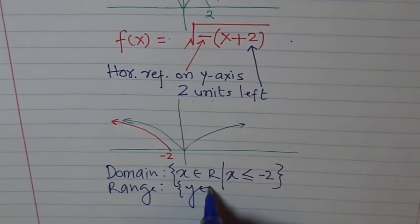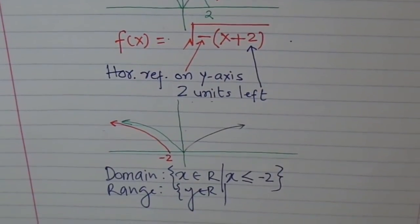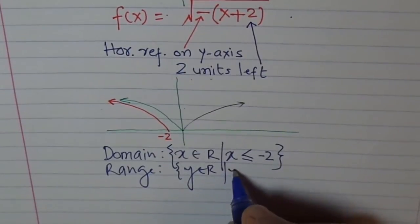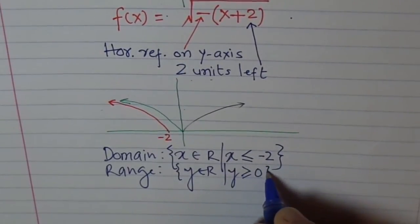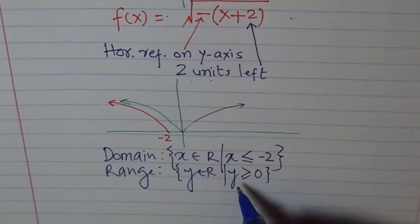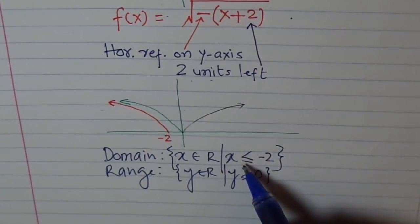And range? Range is y belongs to real number where y is greater than equal to zero. So nothing happened to y values. They remain same. The x values got affected because the transformation was within the function.